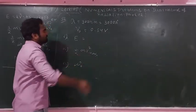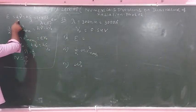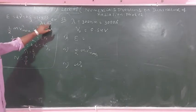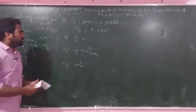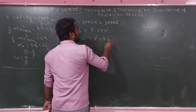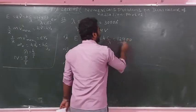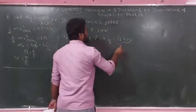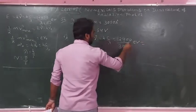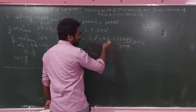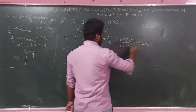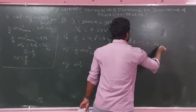First, find the energy of incident photons. Energy E = hν = hc/λ = 12400/λ (in electron volts). With λ = 3000 angstrom: E = 12400/3000 = 4.13 electron volt.